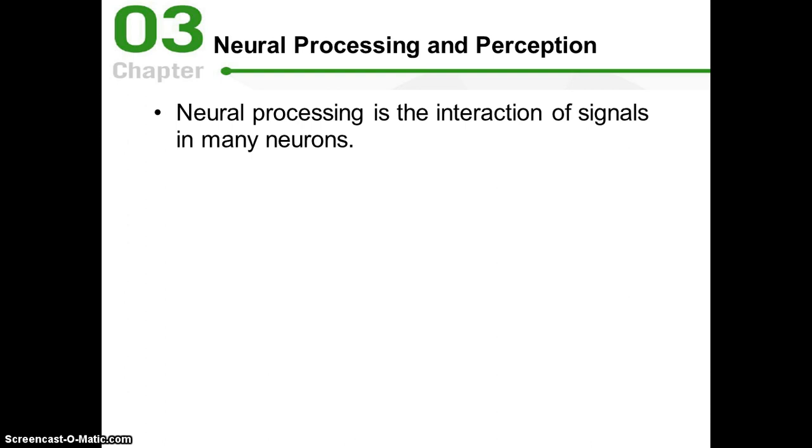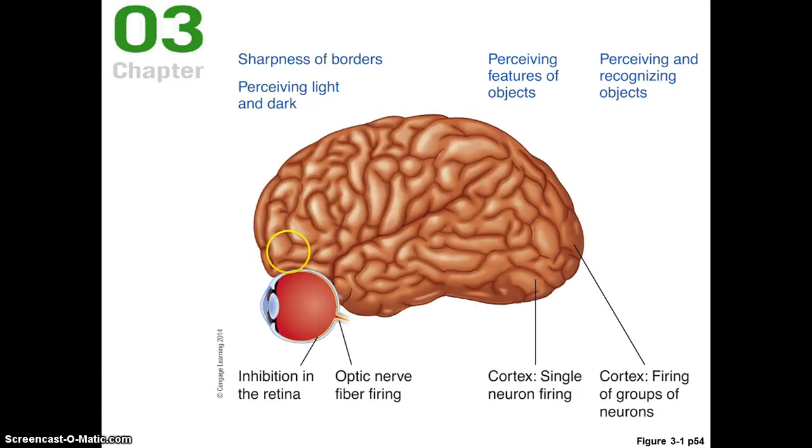This chapter deals with what's called neural processing and perception. We're at this point moving a little bit away from talking about visual perception at the level of the retina, and we'll be moving forward from here somewhat, though we do still have some things left to say about the retina and some of the phenomena that it produces.